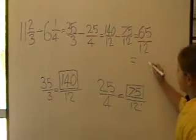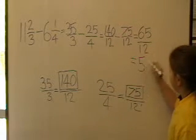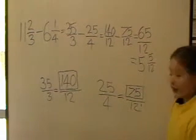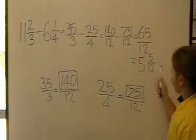So we go how many 12s into 65, which goes 5 times with 5 left over on 12. So our answer is 5 and 5 twelfths.